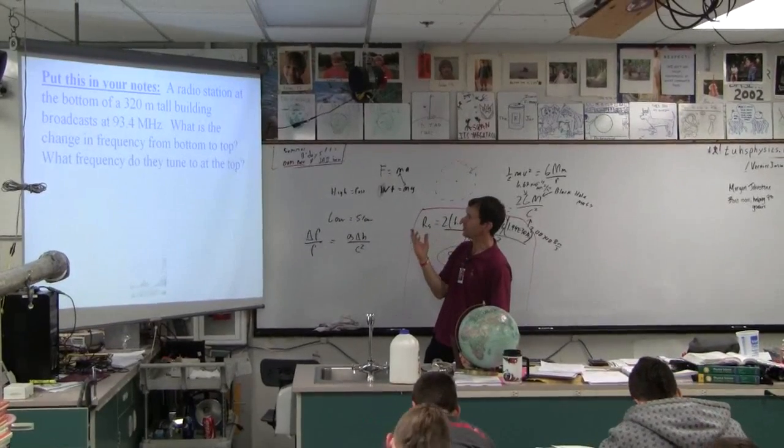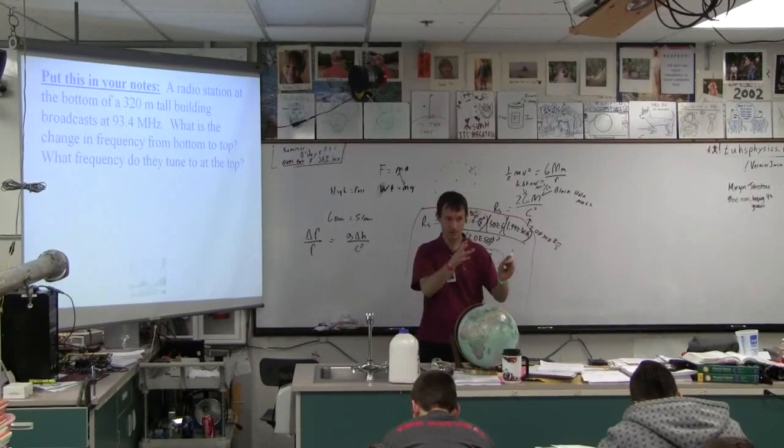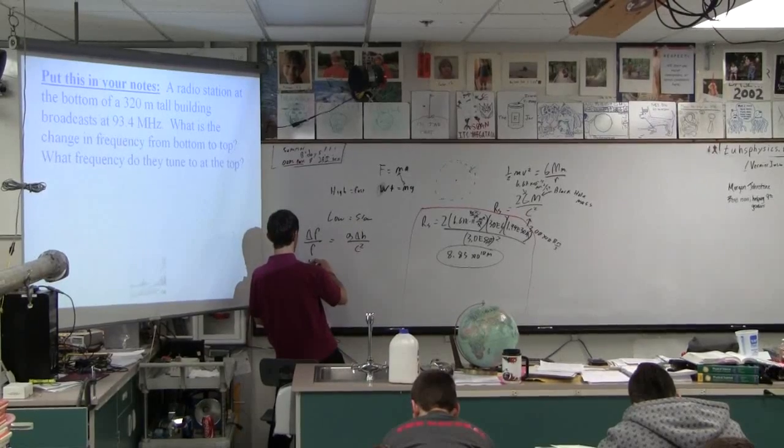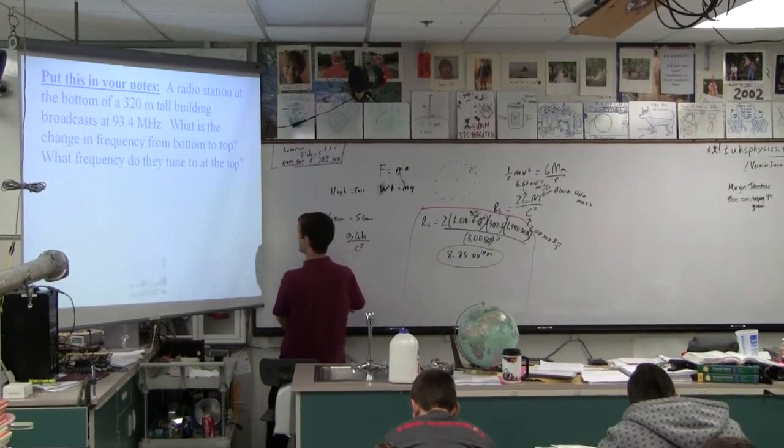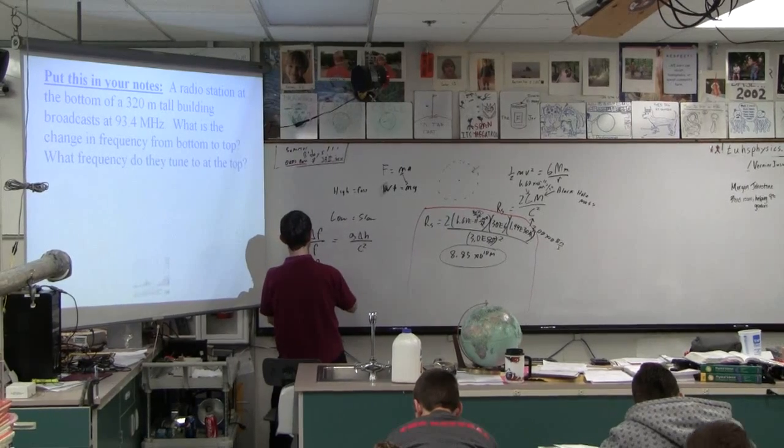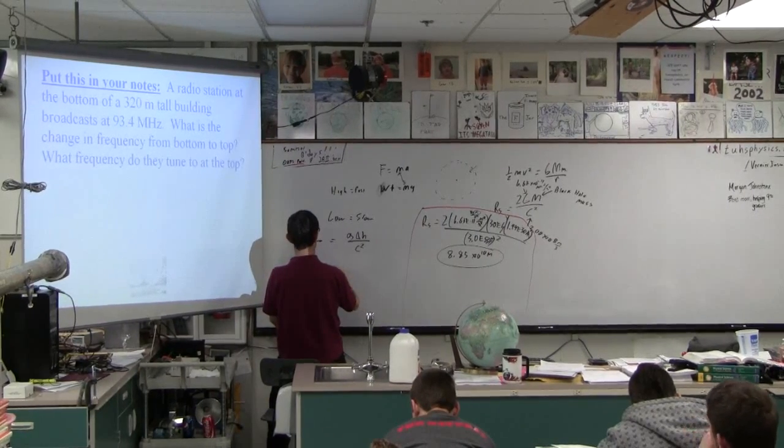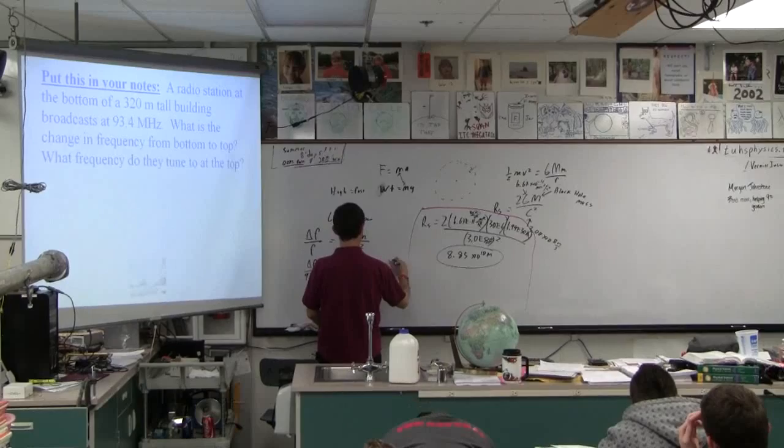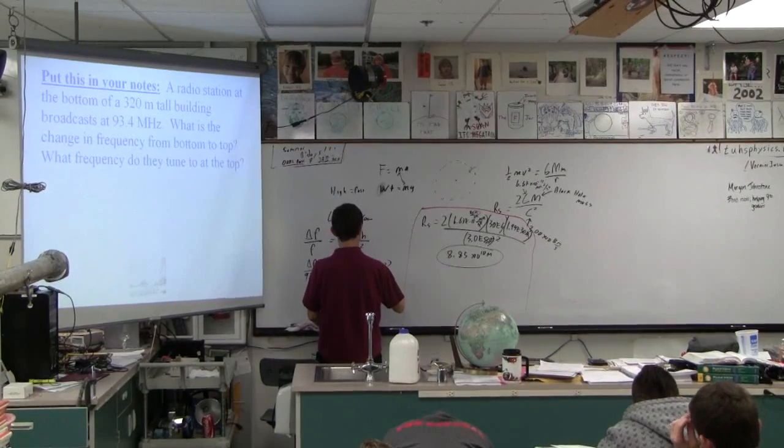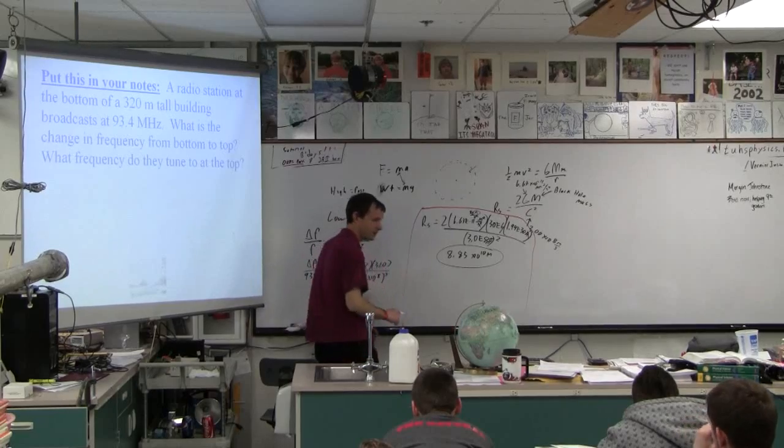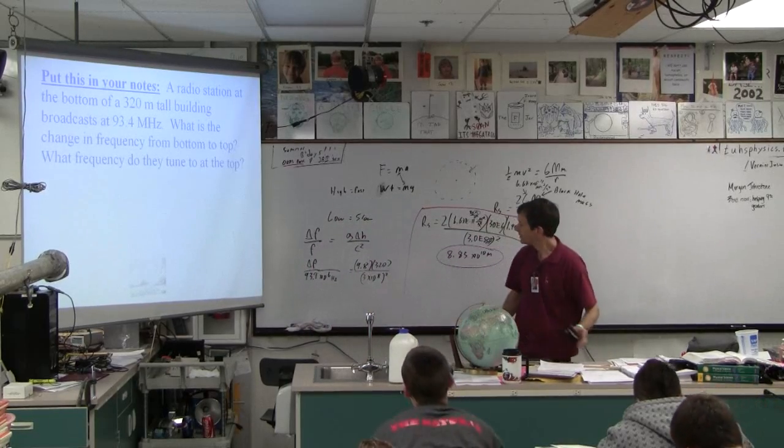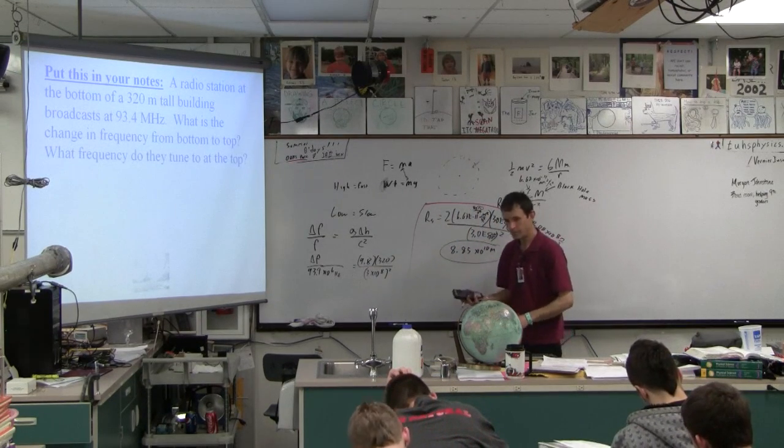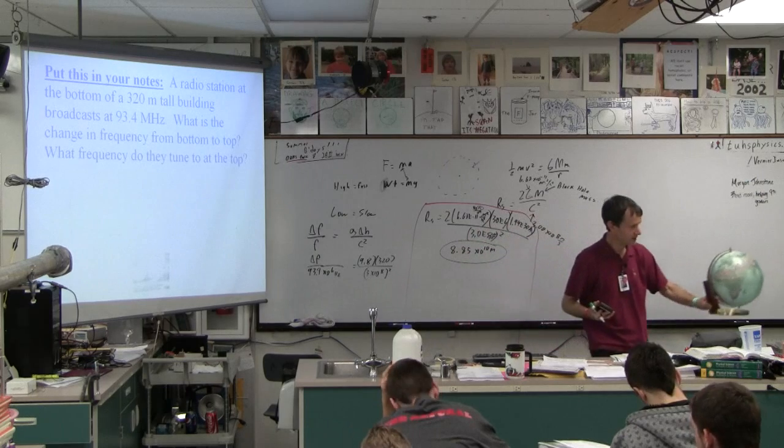So let's, I think we do this twice. Let's do it with gravity to show you that it really doesn't change very much, right? So let's plug the numbers in here. The change in frequency over, I'm going to go 93.4 megahertz. So 93.4 times 10 to the sixth hertz. That's what that means. That's the frequency, right? Is 9.8 times 320 over 3 times 10 to the eighth squared. So take your calculator. You're going to go this times this divided by this. Then you're going to multiply by that. Take your calculator and calculate that.